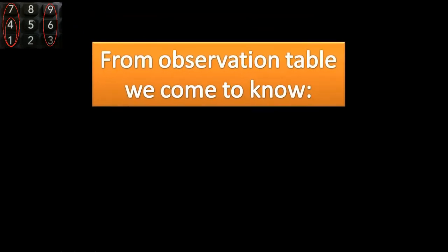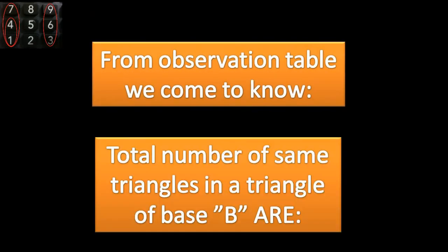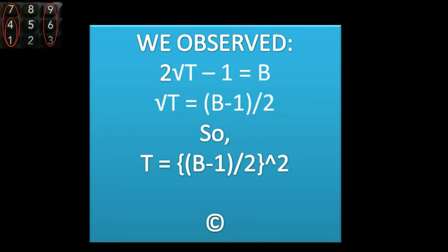From our observation table, we observed that 2√T - 1 equals B, and √T equals (B-1)/2. So, T = {(B-1)/2}².